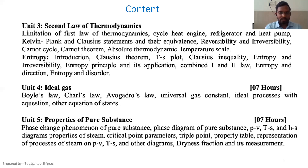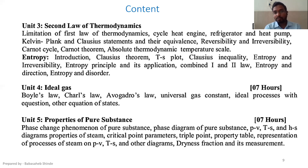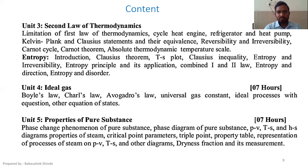The last unit is based on properties of pure substances. We'll study processes related to steam, their phase change phenomena, phase diagrams, P-V, T-S, and H-S diagrams for steam, the critical point, triple point, property tables, and representation of processes on P-V-T-S diagrams. We'll also calculate dryness fraction and its measurement techniques. Dryness fraction represents the moisture content of steam — when converting water to steam, initially we never get completely dry steam.